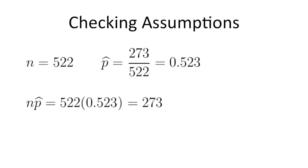n times p hat equals 522 times 0.523. This equals 273. In other words, there were 273 students in this sample who said yes, they own a dog.